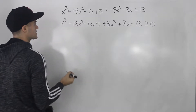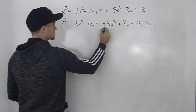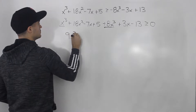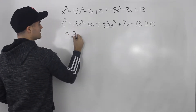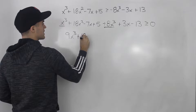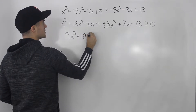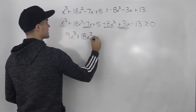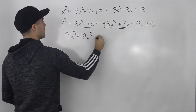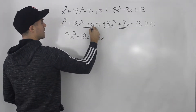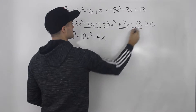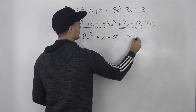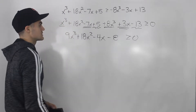So now let's collect some like terms. 1x cubed plus 8x cubed gives us 9x cubed. The 18x squared is by itself, so we'll just write that as is. Negative 7x plus 3x gives us negative 4x. And then 5 minus 13 gives us negative 8. And we're finding when is it greater than or equal to zero.